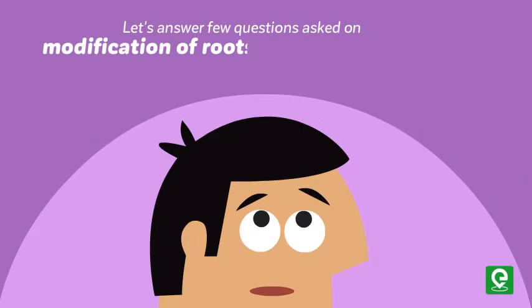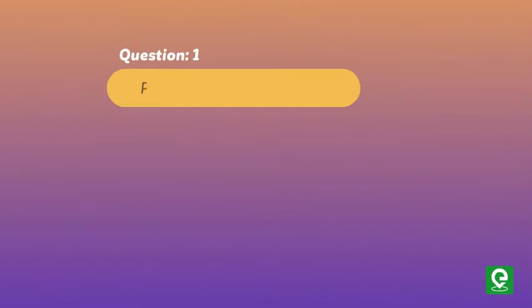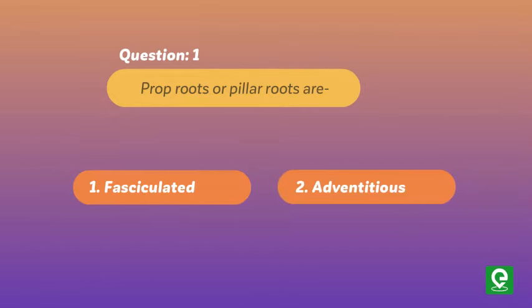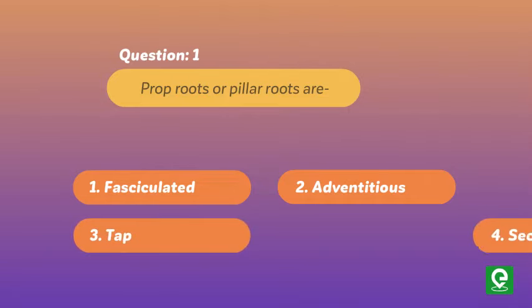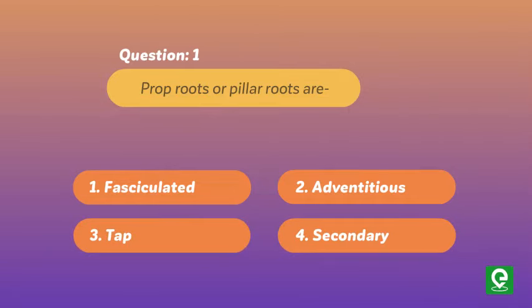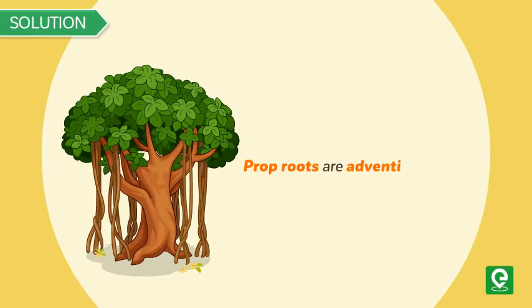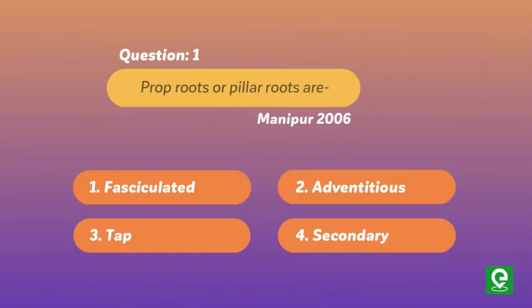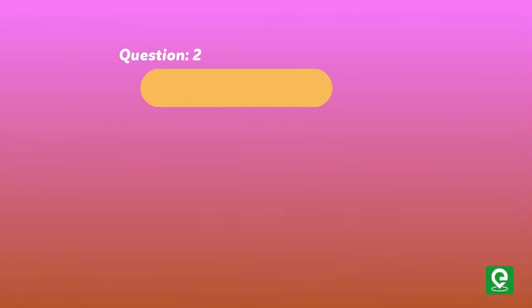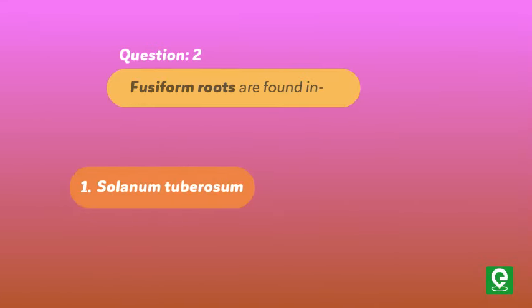Let's answer a few questions asked on modification of roots in entrance exams. Question one: prop roots or pillar roots are — (1) fasciculated, (2) adventitious, (3) tap, (4) secondary. This question was asked in Manipur 2006. Solution: prop roots are adventitious roots modified for support, hence option two is correct.